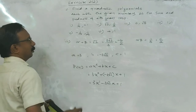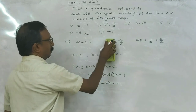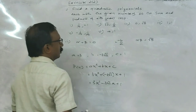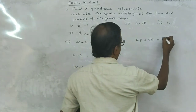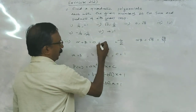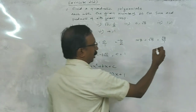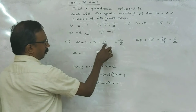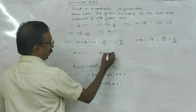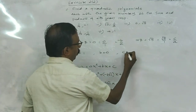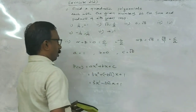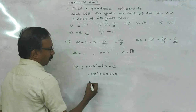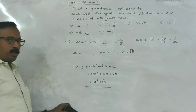Third question: alpha plus beta is 0 and alpha beta is root 5. Root 5 can be written as root 5 by 1 and 0 can be recognized as 0 by 1. This is minus B by A and C by A. So A equals 1, minus B equals 0 so B equals 0, and C equals root 5. Therefore the polynomial is 1 times X squared plus 0X plus root 5, so X squared plus root 5, isn't it?